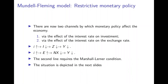Compared to the closed economy, there are now two channels by which monetary policy can affect the economy. The first is the familiar channel: the interest rate affects investment, changing the goods market equilibrium. The second is that the interest rate affects the exchange rate, which in turn affects net exports. If the interest rate increases, investment falls and domestic income falls; simultaneously, the higher interest rate causes the currency to appreciate, reducing net exports and further reducing income. The second channel requires the Marshall-Lerner condition to be operative.